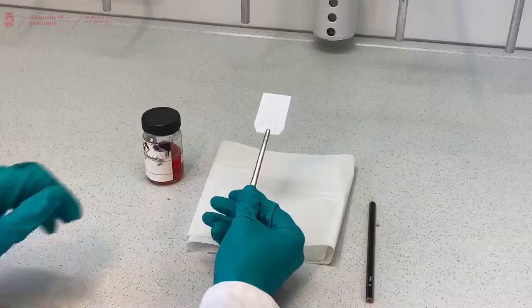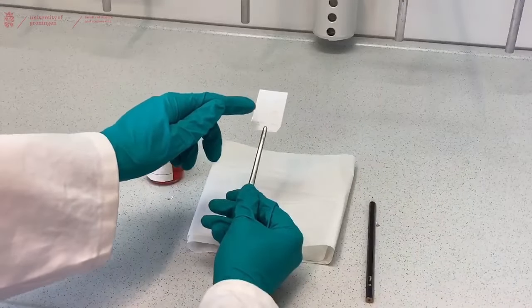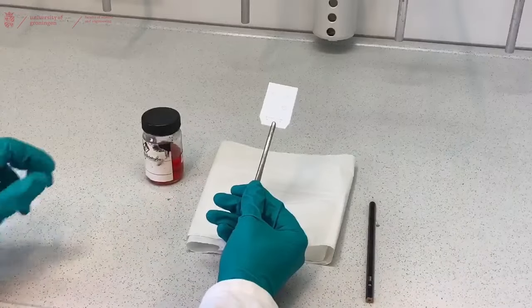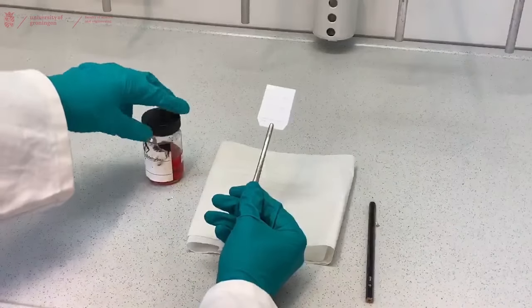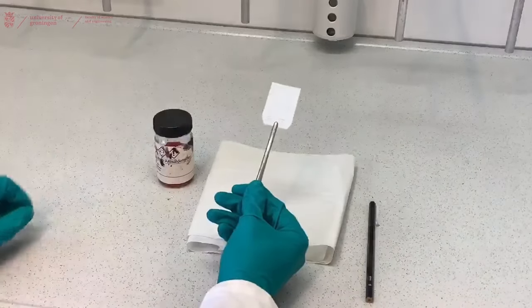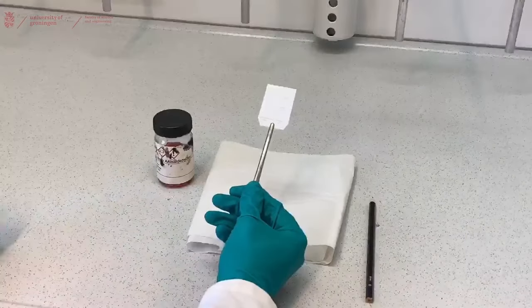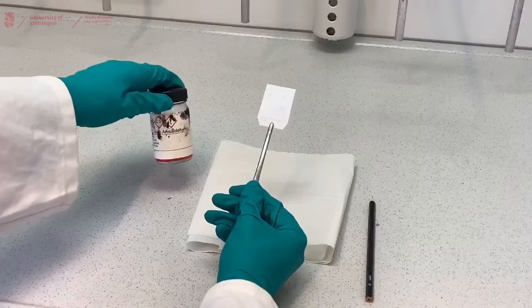We tested our TLC plate for visible spots and for spots that are visible under UV light. But it might be that there are spots on your TLC plate that are not visible under UV or by the naked eye. So what you can do is stain the TLC plate using chemical stains. These chemicals will often react with compounds on your TLC plate. In this case we are going to use the TLC stain anisaldehyde. To use that you just open your stain jar.